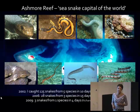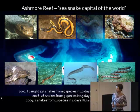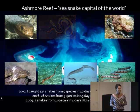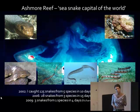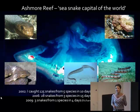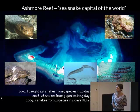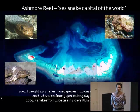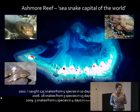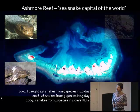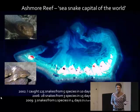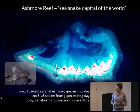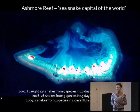Between 1994 and 1998, Mick Guiney estimated a standing stock of 40,000 snakes at any one time at Ashmore Reef. In 2002, I did my first trip to Ashmore Reef — 10 days of dedicated searching — and caught 125 snakes from five species. Critically, two of the three species endemic to Ashmore Reef I didn't find despite intensive searching. Then in 2006, Mick Guiney was there for 15 days and only caught 28 snakes from three species. And then in 2009, Zoe Richards and collaborators saw just three snakes from one species in four days.